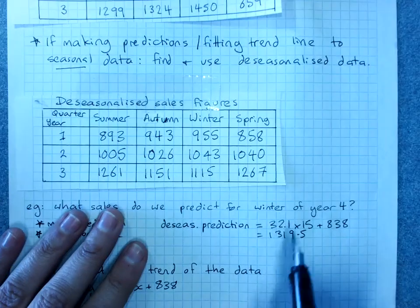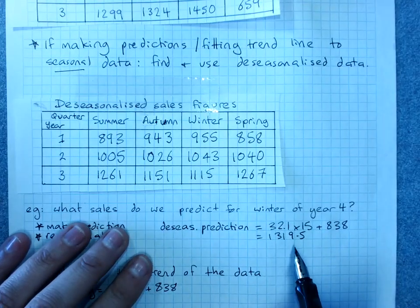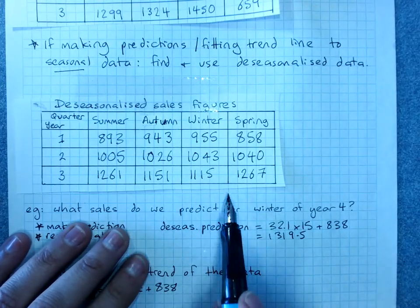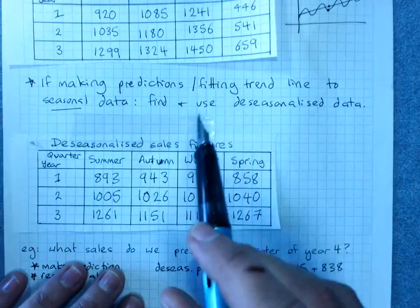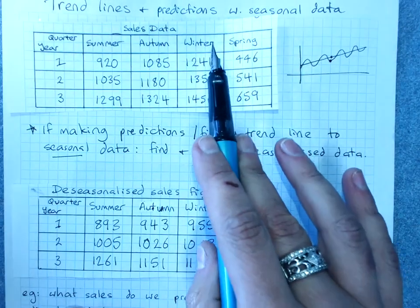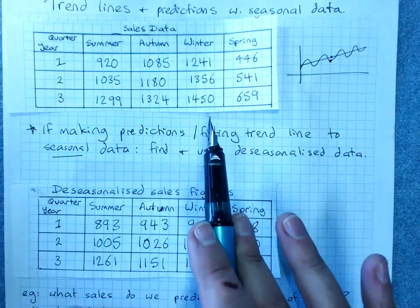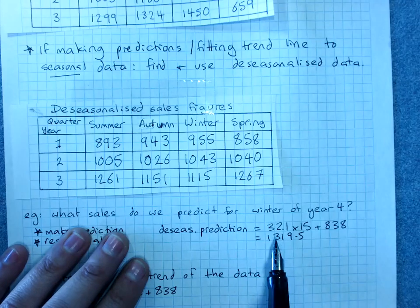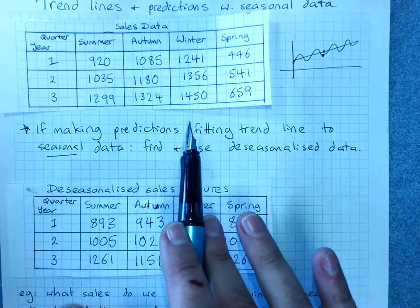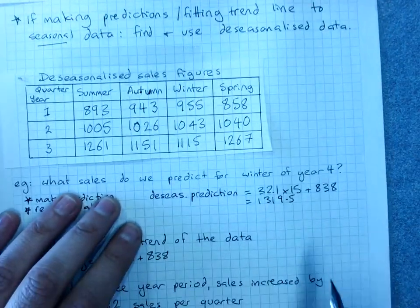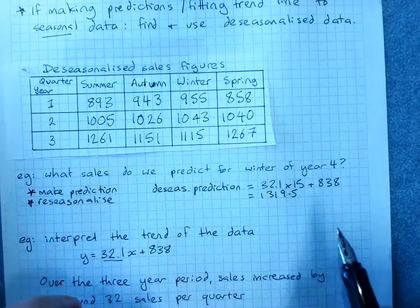Now that's a prediction for winter of year 4, and that would be here, but this is de-seasonalized. If you look at the pattern for winter, our seasonalized data, this doesn't fit the pattern. It's too low. We're expecting something in the 1500s or thereabouts.